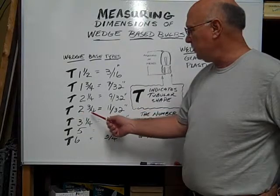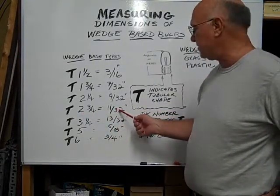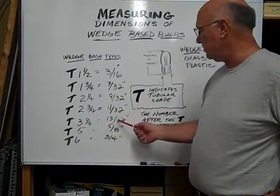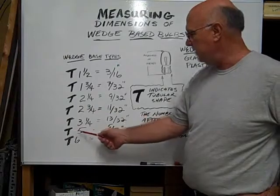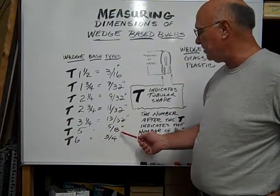A T two and three-quarters is eleven thirty-seconds of an inch. A T three and a quarter is thirteen thirty-seconds. A T five is five eighths of an inch.